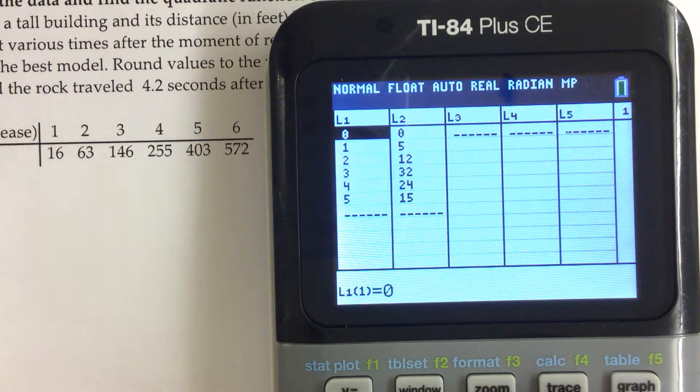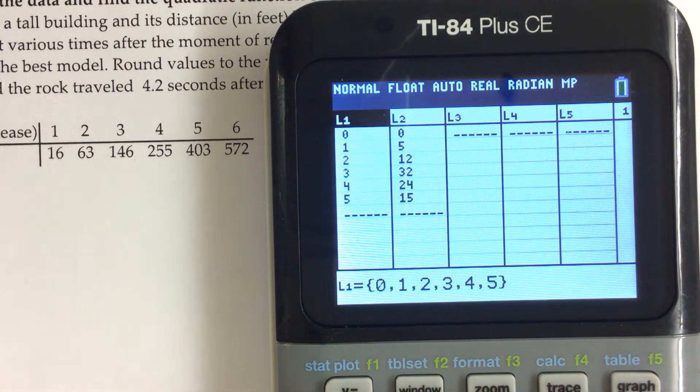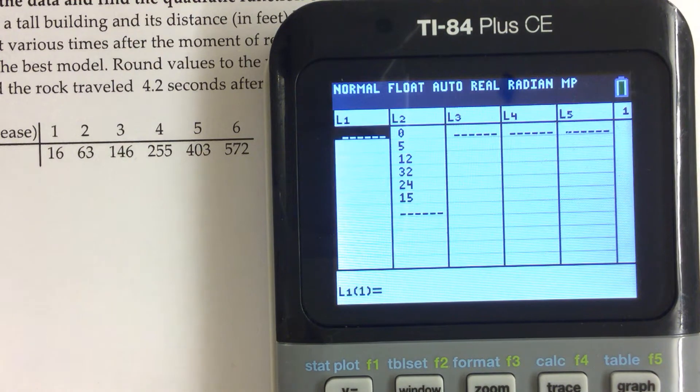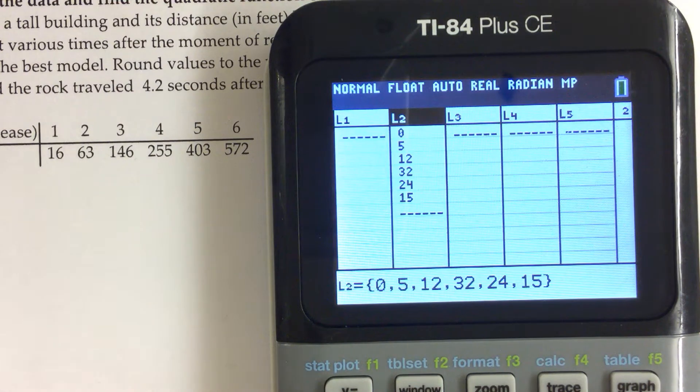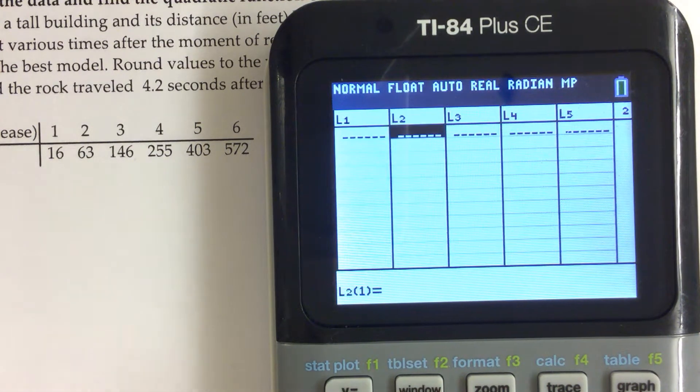To clear it out, you go to the list of the data you want to clear out, push the up arrow until you highlight the name of the list, push the clear button, and then enter, and it will clear out all those values. Then move over to the other list, highlight the name of the list, push clear, enter, and now we have two clear lists.